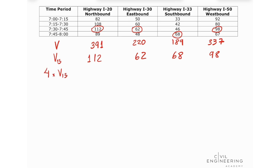Now I can calculate 4 times my V15 by multiplying each greatest 15-minute volume by 4. That gives me 448, 248, 272, and 392.